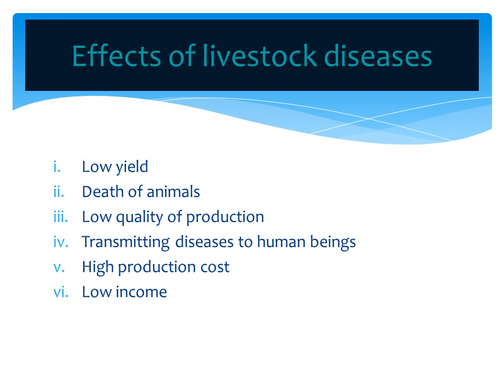Number five: high production costs. High production costs arise due to administration of drugs to cure the disease. If the animals are very sick, you go and look for a veterinary officer — the veterinary officer is going to charge for the services rendered for curing the animal. By so doing, the farmer incurs high costs of production.